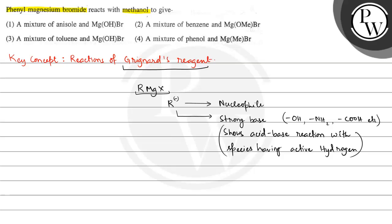So here in the reaction we have phenyl magnesium bromide, PhMgBr, reacting with methanol, CH₃OH. Methanol has a hydroxyl group where hydrogen is directly attached to oxygen, so this becomes an active hydrogen. The Ph⁻ ion in phenyl magnesium bromide accepts this proton to give us benzene.